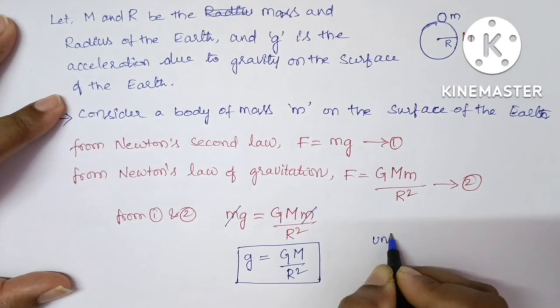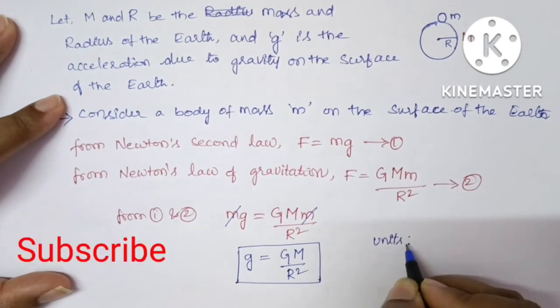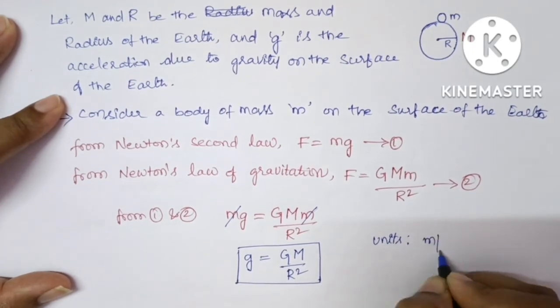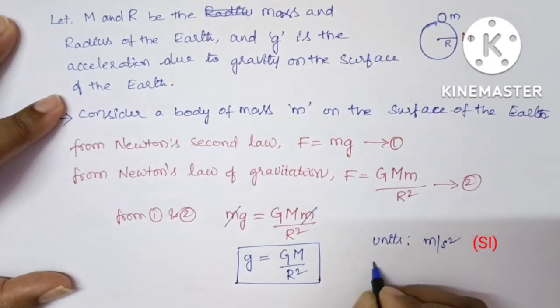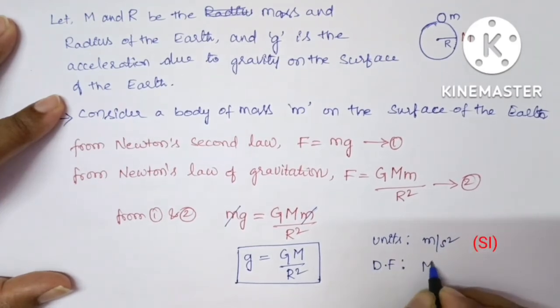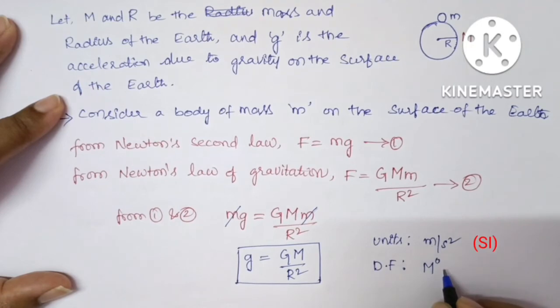Units are same as the acceleration: meter per second square. And dimensional formula is here, mass term is absent so M power 0. Here meter is there so L. And second is there so T power minus 2. This is the dimensional formula of acceleration due to gravity.